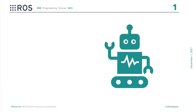Robots consist of many functional components and require specialized skills in various fields. Therefore, there are limitations which need to be overcome. We need a platform to provide the bridge between robot hardware and robot software. That's where ROS comes in.